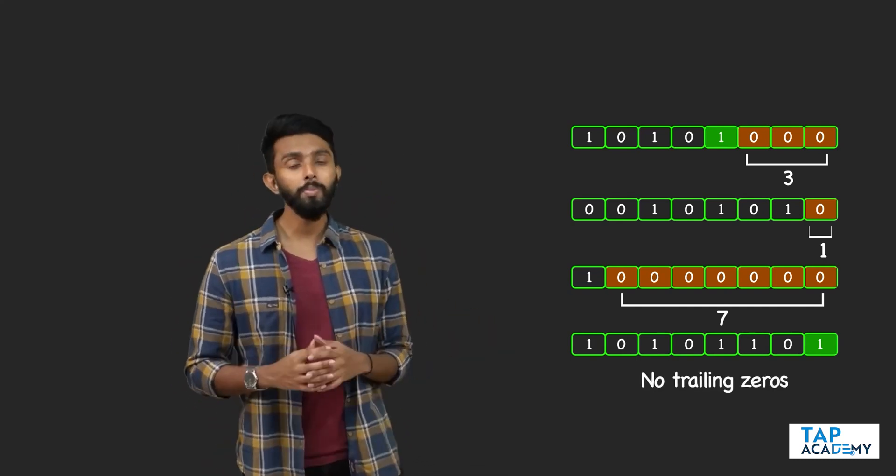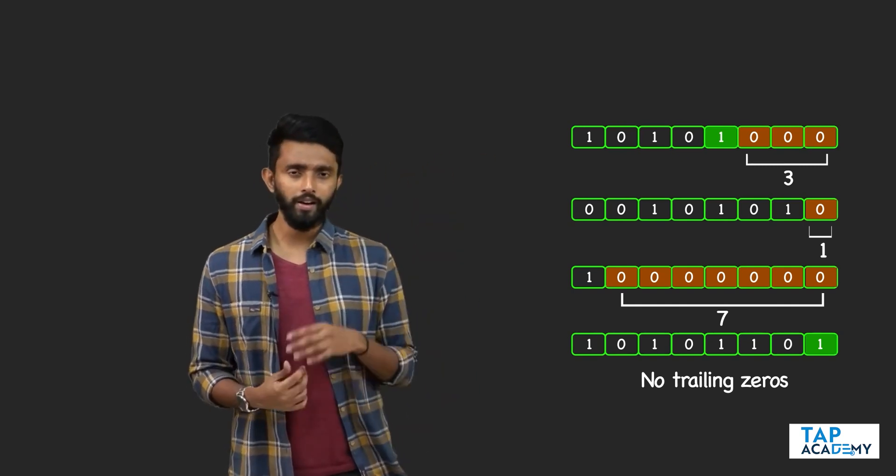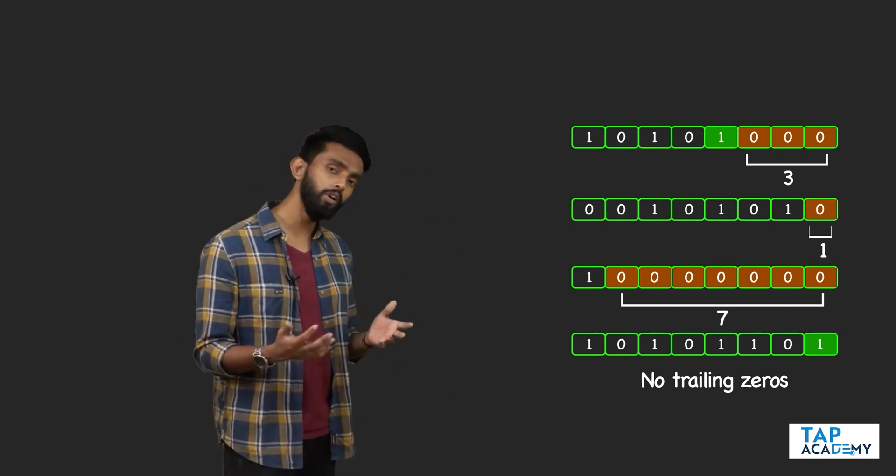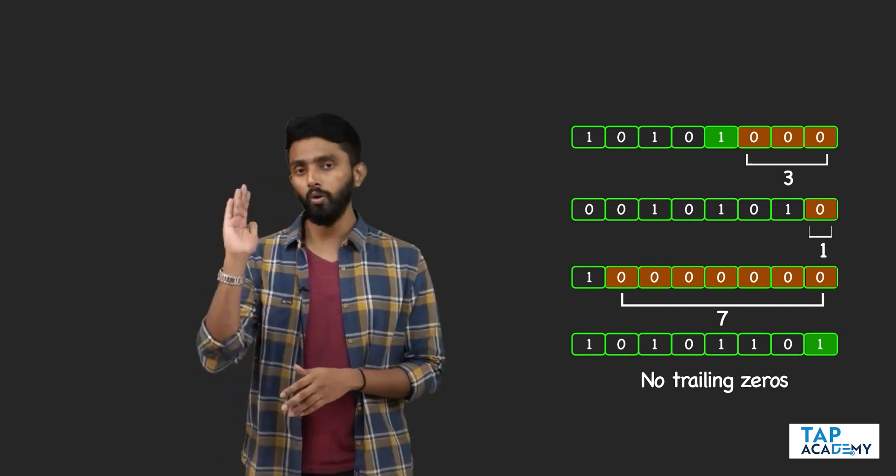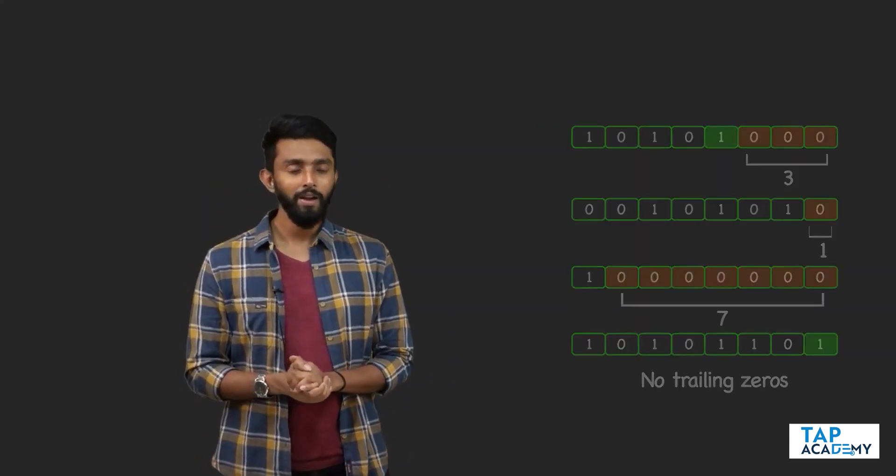What is meant by trailing zeros is clear. How do you calculate that? I've already given you the hint: look at the rightmost set bit and after that how many zeros are there. You already know how to work with the rightmost set bit.